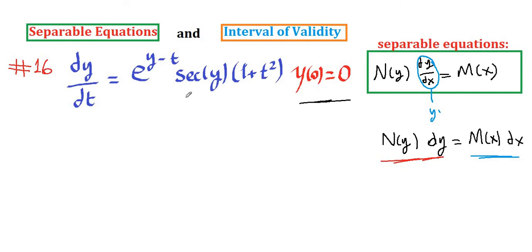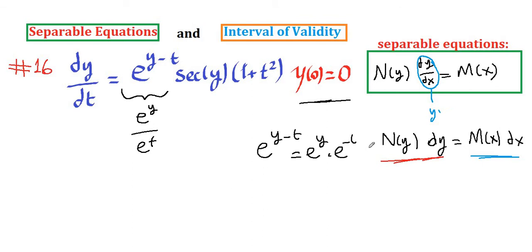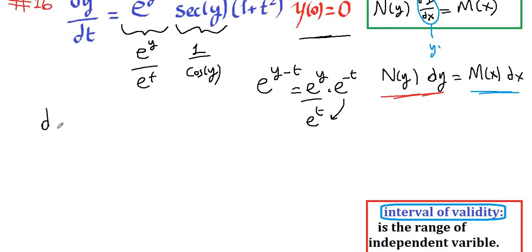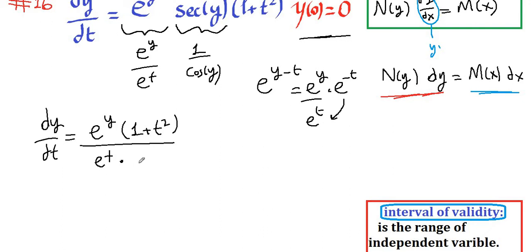Before we start, we are going to rearrange this function. We rewrite e to the y minus t as e to the y over e to the t using the power rule, since e^(y-t) equals e^y times e^(-t), and moving it to the denominator changes the sign to positive t. We also rewrite secant of y as 1 over cosine y using trigonometric identities. So dy/dt equals e^y times (1 plus t squared) divided by e^t times cosine y.